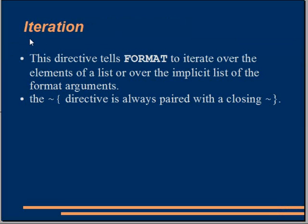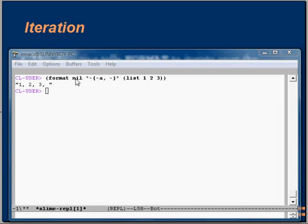Format also has an iteration directive. This directive tells format to iterate over the elements of a list or over the implicit list of format arguments. The flower bracket tilde open-brace and tilde close-brace is used for iteration in the format function. The loop goes on until there are no more elements in the list provided.